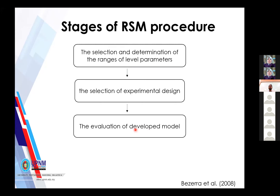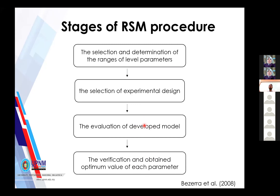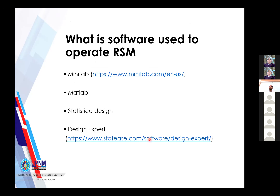Once you evaluate the model and confirm it meets the criteria, the next stage is to verify and obtain the optimum value. The RSM model will generate the optimum parameter values to achieve your desired goal — either minimizing or maximizing the response. There are four main software options used to operate RSM: Minitab, MATLAB, Statistica, and Design Expert. Today I will show how to operate Design Expert using RSM. You can download Design Expert from the provided link.